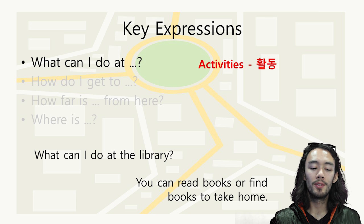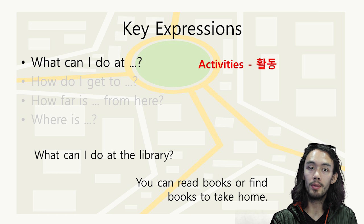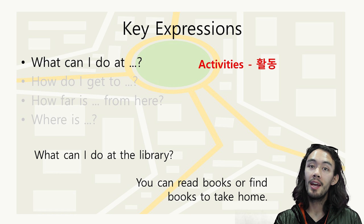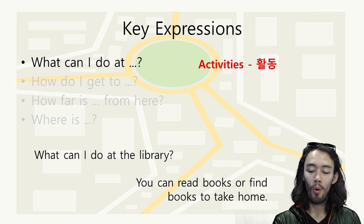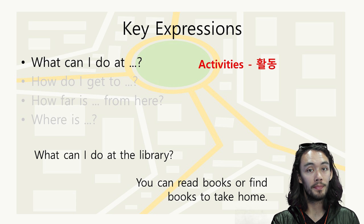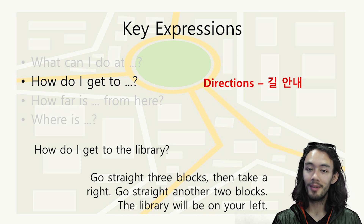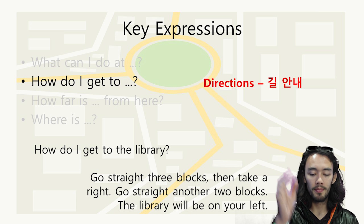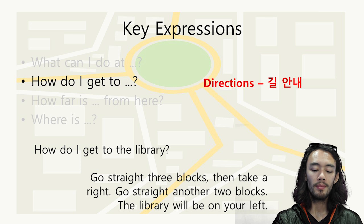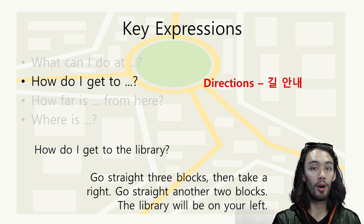Let's do the first one. 'What can I do at the library?' — you can read books or find books to take home. Then, 'How do I get to the library?' — go straight three blocks, then take a right, go straight another two blocks, and the library will be on your left.